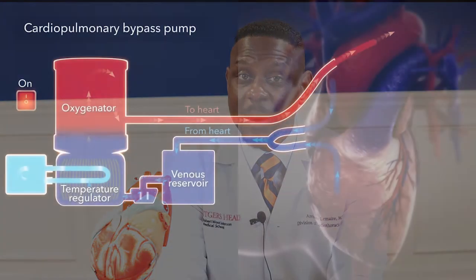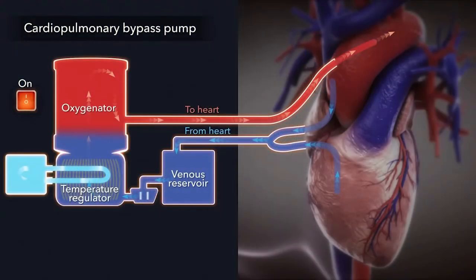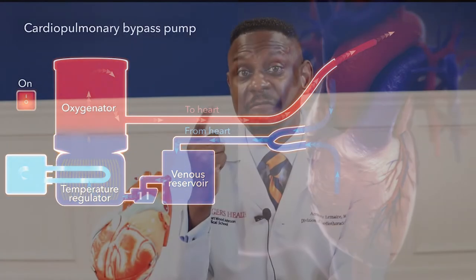Once the patient gets to the operating room, they'll go to sleep. At that time they'll be prepped and draped for surgery. Another critical aspect of performing this operation is getting on the heart-lung machine — cardiopulmonary bypass — and that requires both arterial access and venous access.